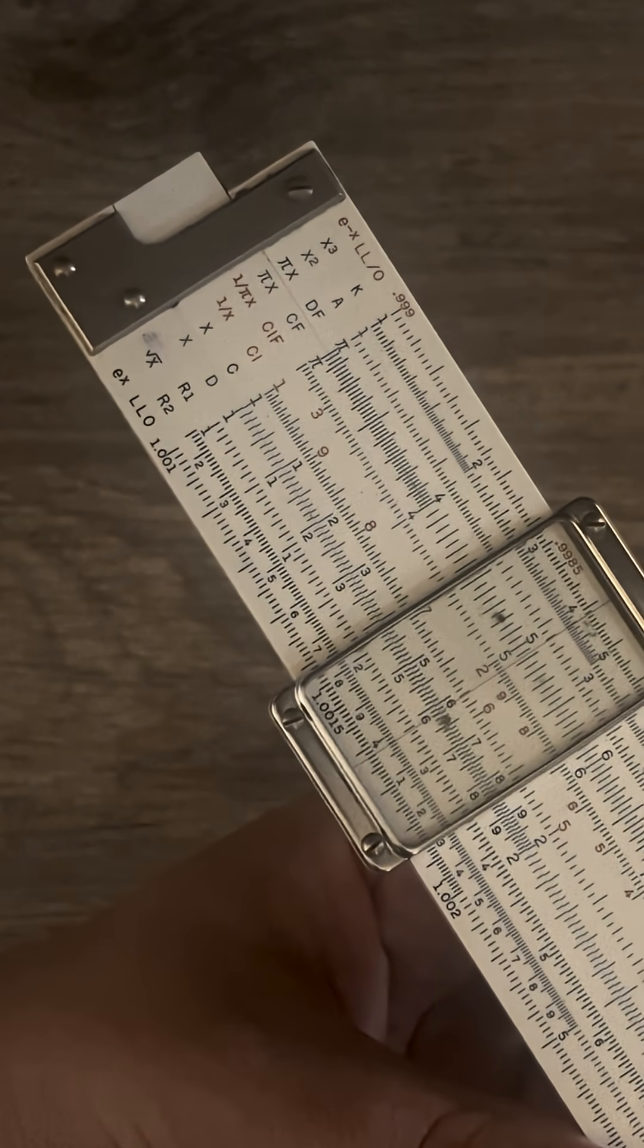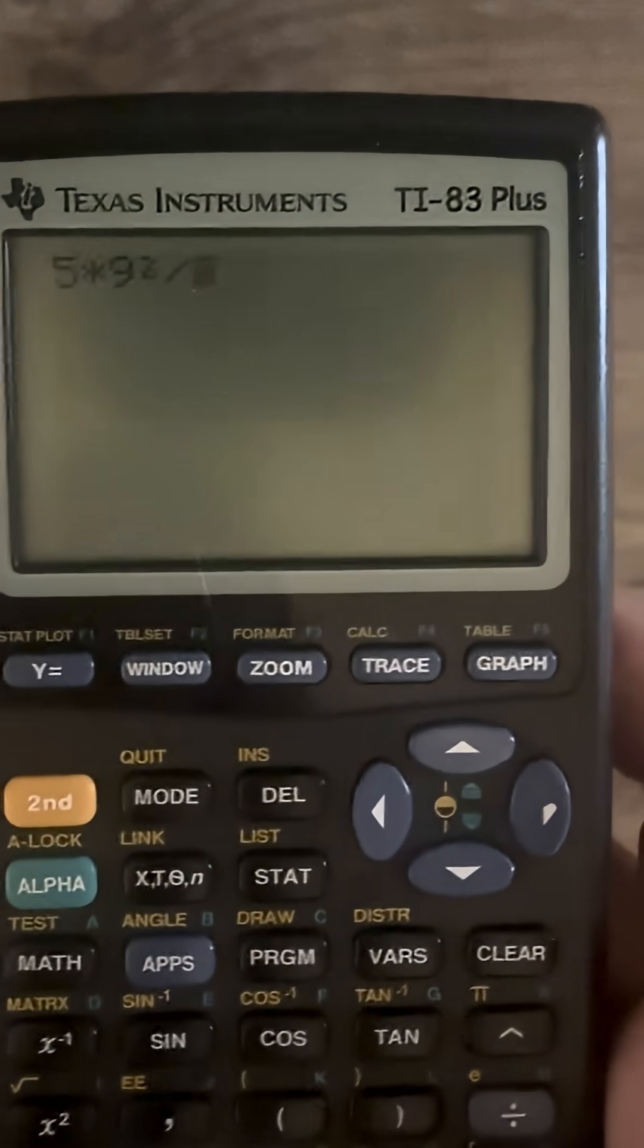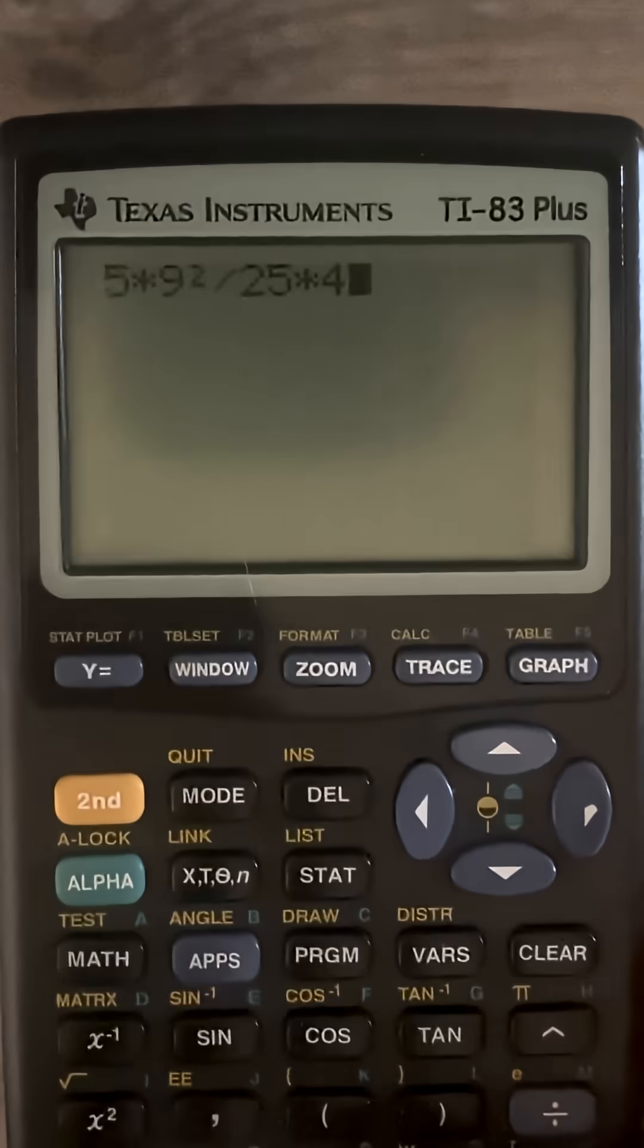So let's do numbers that are a little bit bigger. So let's say we do 5 times 9 squared divided by 25 times 4, and we'll go from there.